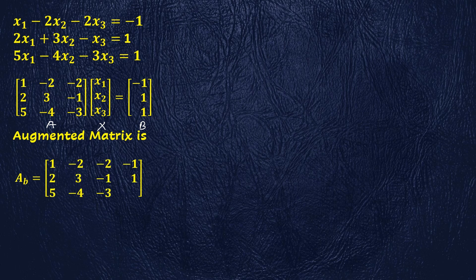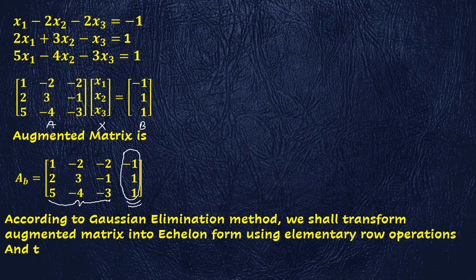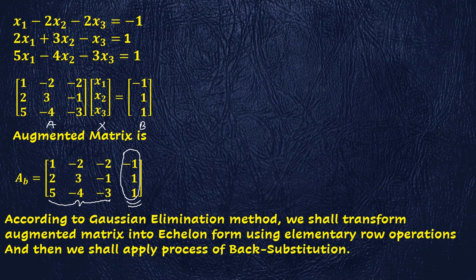We are to solve the system by Gaussian elimination method, so we construct the augmented matrix AB. The augmented matrix is constructed using the matrix of coefficients plus the matrix of constants. The matrix of constants has been included as the fourth column, which is why it is called the augmented matrix. We will transform this augmented matrix into echelon form using elementary row operations, and then apply back substitution to find the values of unknowns x1, x2, and x3.